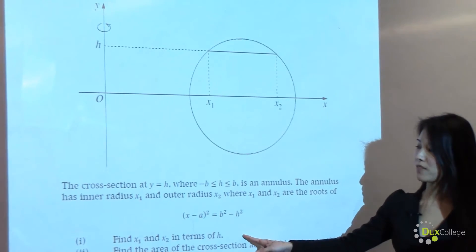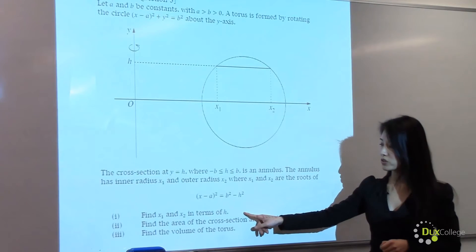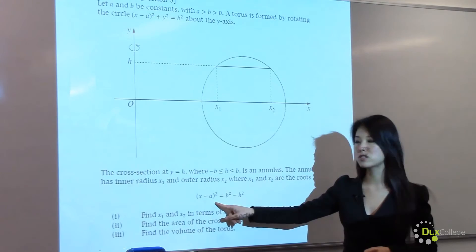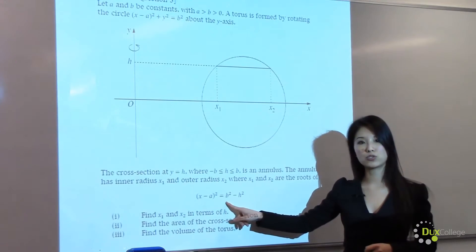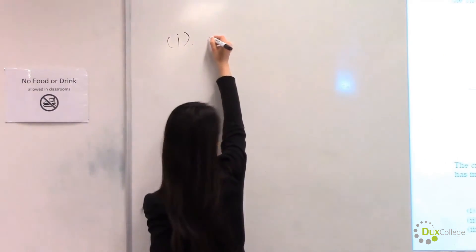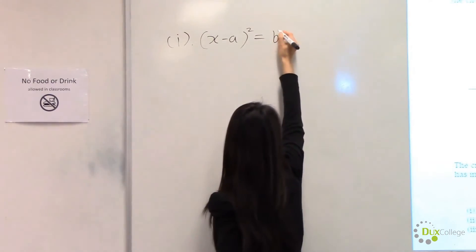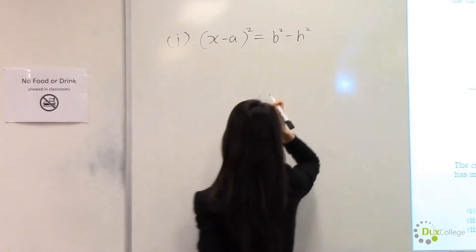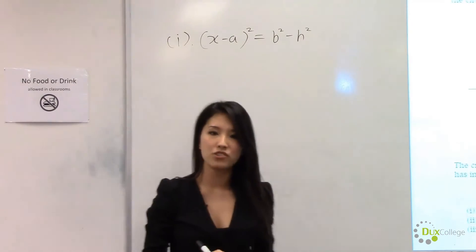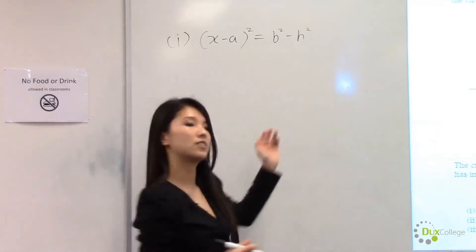In part one, we have to find x1 and x2 in terms of h. What we need to do is solve the above equation to find x1 and x2. To solve this equation, we first need to take the square root of b squared minus h squared.